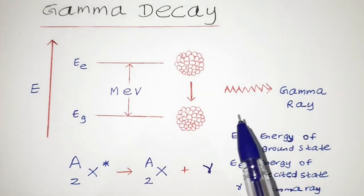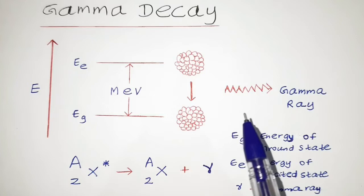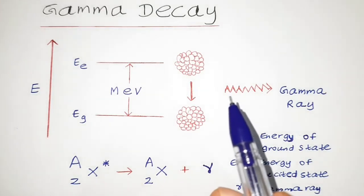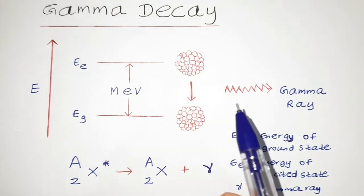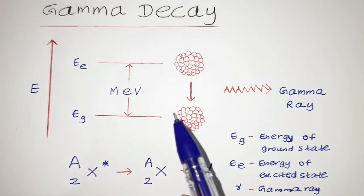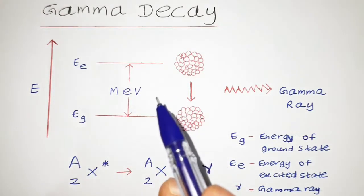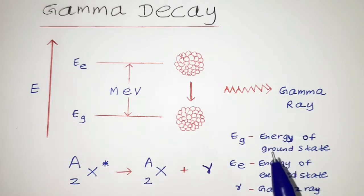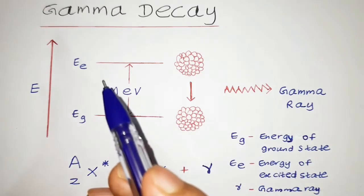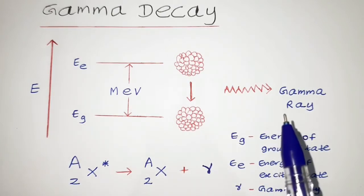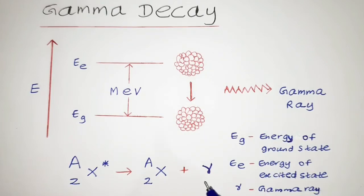Electron energy levels are of energy of few electron volts, whereas nuclear energy levels are quite energetic and they are of few mega electron volts. As transition of nucleons occur at high energy, they emit gamma particles that are quite energetic. Here you can observe that the difference of energy levels are of energy of mega electron volts. EG is denoted as the energy of the ground state and EE is denoted as the energy of the excited state. The gamma ray is being emitted and that is being symbolized by this particular Greek symbol of gamma.